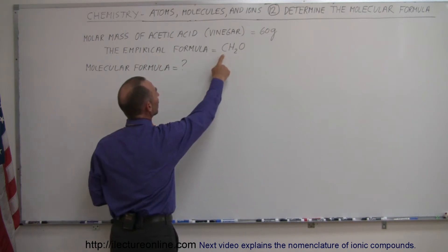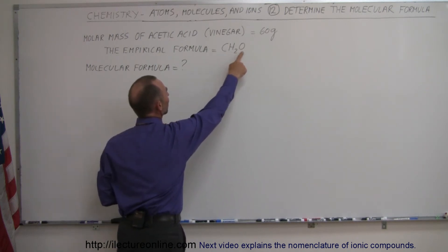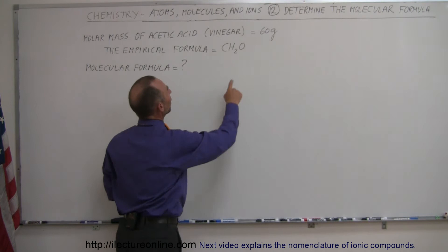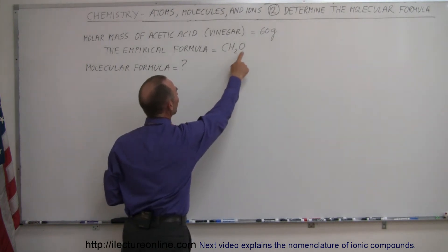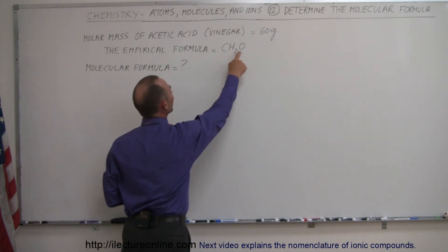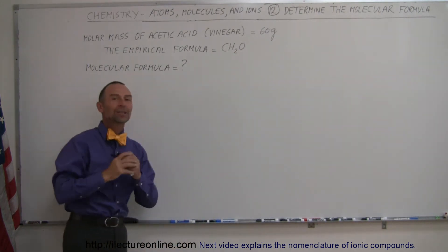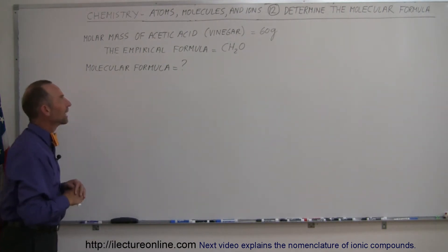So we have one atom of carbon, one atom of oxygen, and two atoms of hydrogen in a particular molecule of acetic acid.